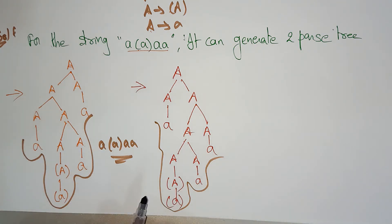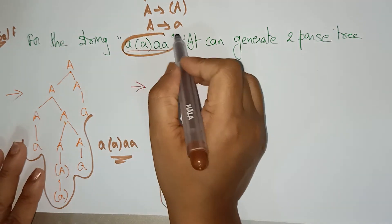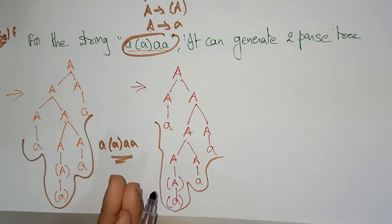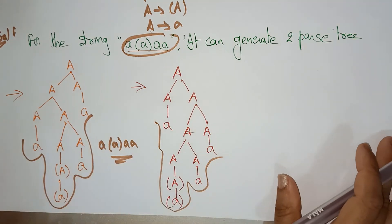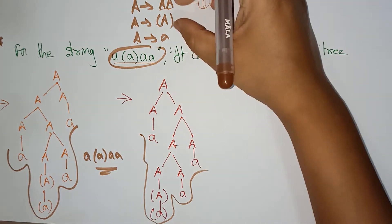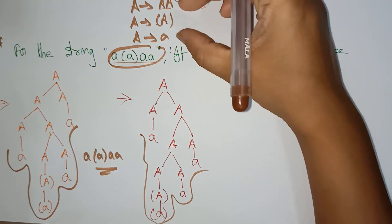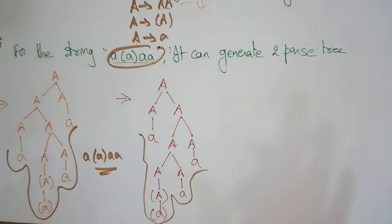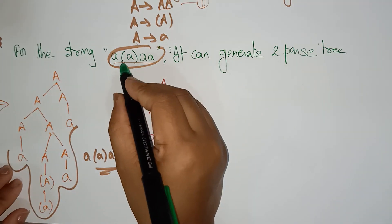You might ask: why is it ambiguous only for this string? Whatever string this grammar can derive, those strings declare that the given grammar has ambiguity — it is not just the production rules. If you have a doubt, let me take one more example.